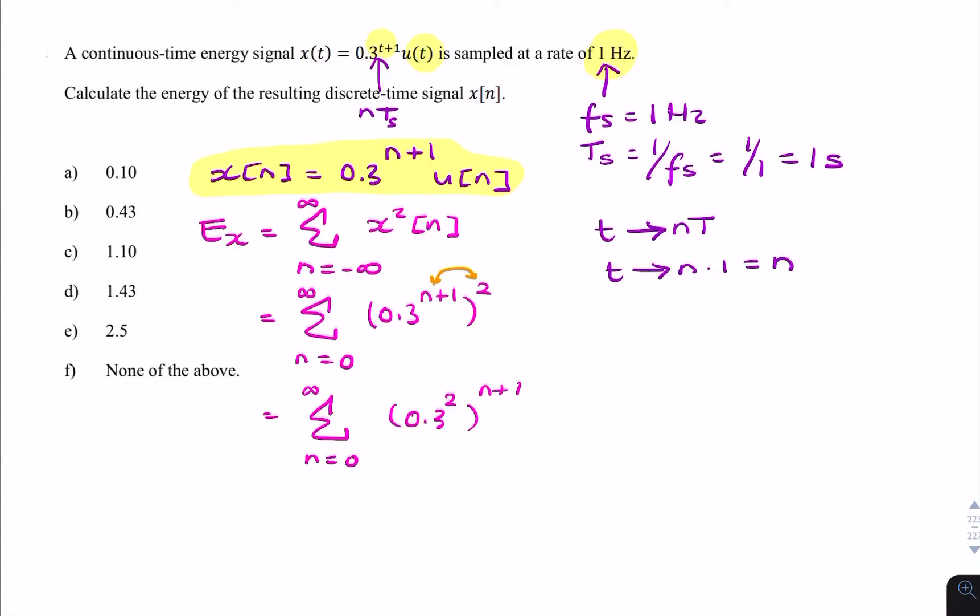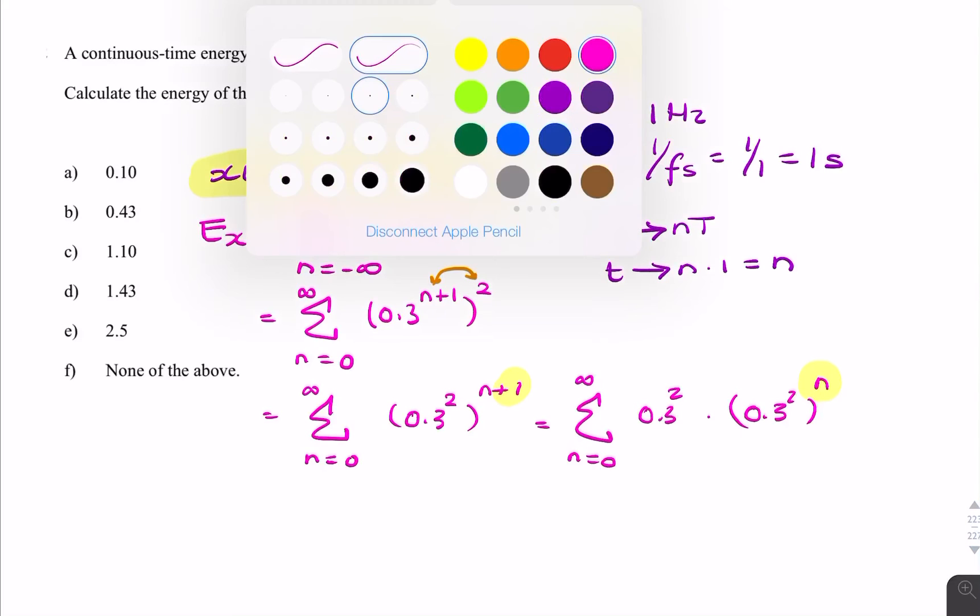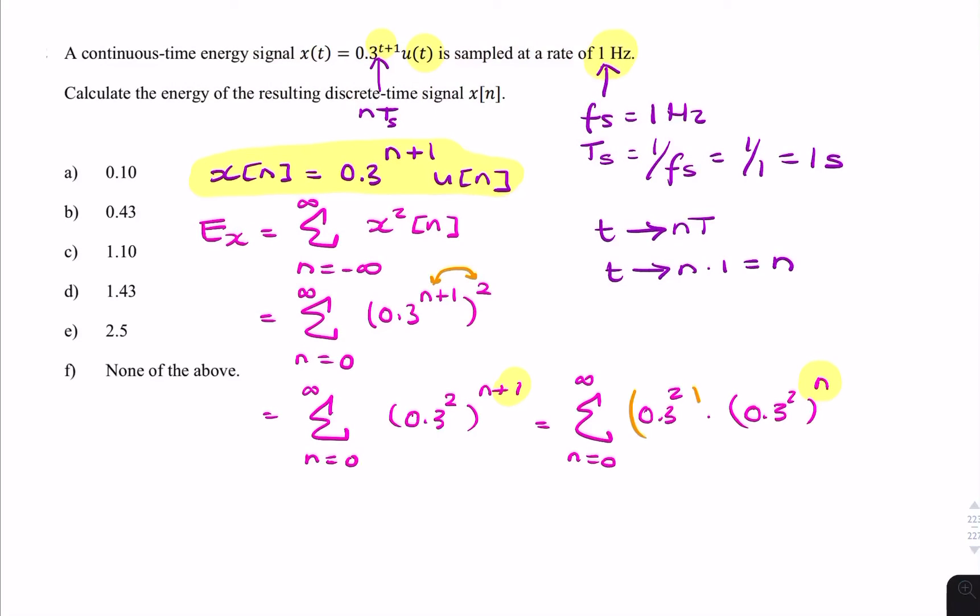Now that looks more familiar to us as a Taylor series. To make it even more familiar, let's get rid of this plus 1. So we can now write it as a summation n equals zero to infinity of 0.3 squared times 0.3 squared to the power n. So that's where the plus 1 comes from. That's n. So it's as if this is to the power 1, that's to the power n, and 1 plus n is n plus 1.